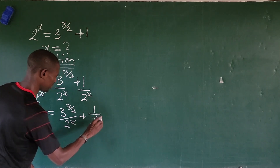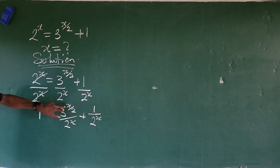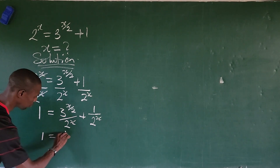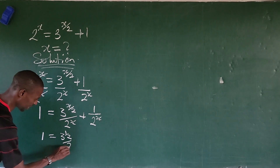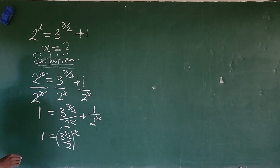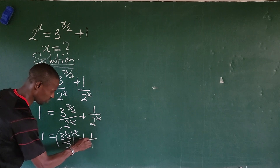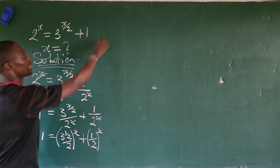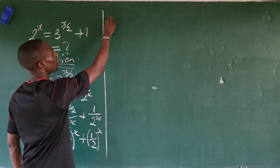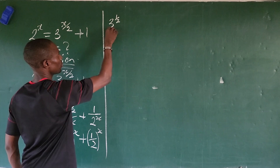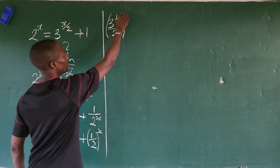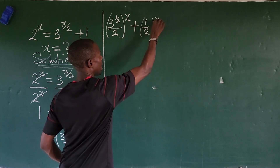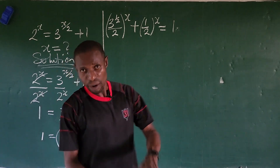Now if you look at this, we can rewrite this expression. Rewriting this, we're going to have: 1 is equal to 3 to the power of 1 over 2, all over 2, everything raised to the power of x, plus 1 over 2, all raised to the power of x.